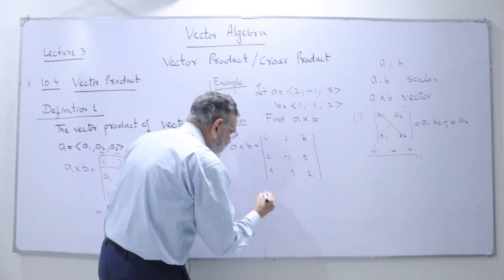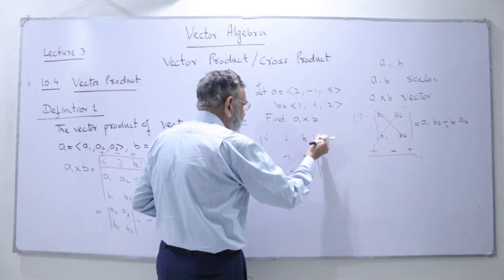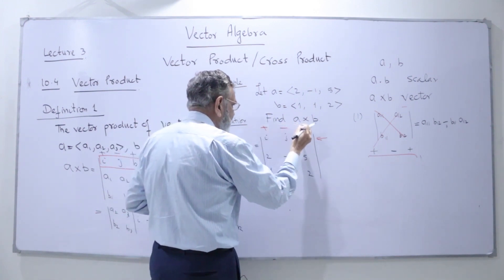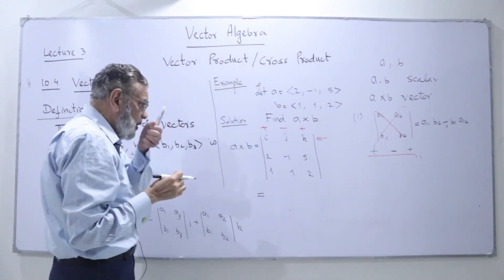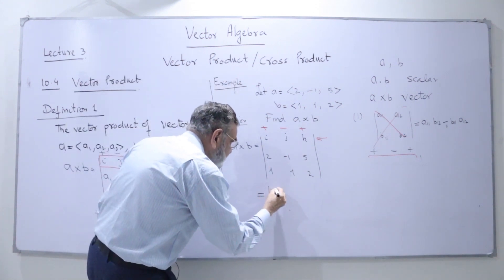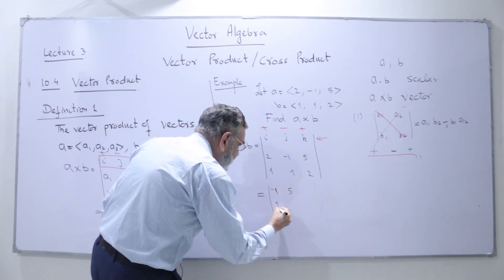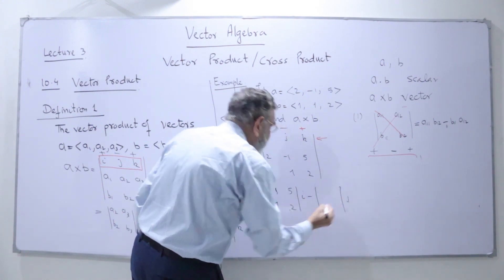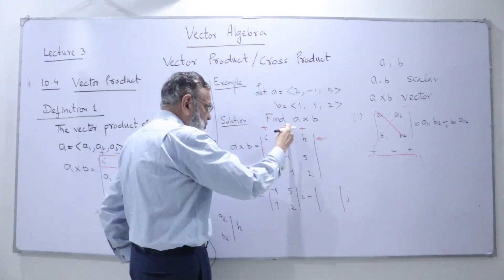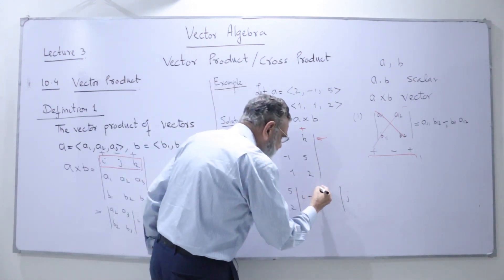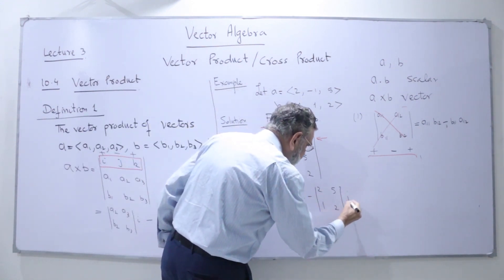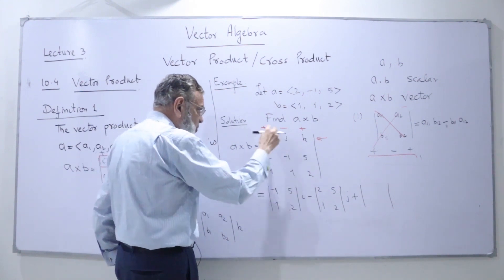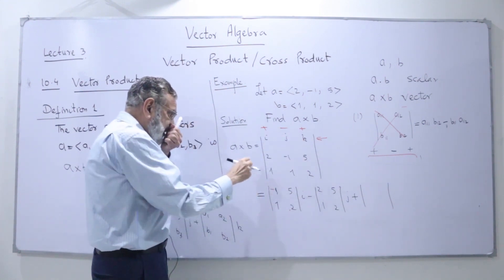Now we open this determinant from the first row. When we open it from the first row, we have a plus sign for i, minus sign for j, and plus sign for k. So we write the cofactor of i as (-1, 5; 1, 2) multiplied by i. Then we have minus sign times the cofactor of j, which is (2, 5; 1, 2). Then we have plus k, and the cofactor of k is (2, -1; 1, 1).